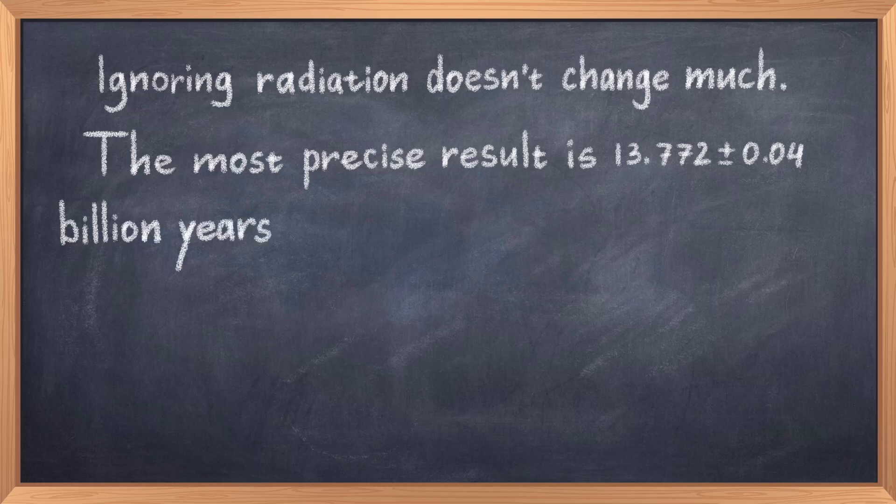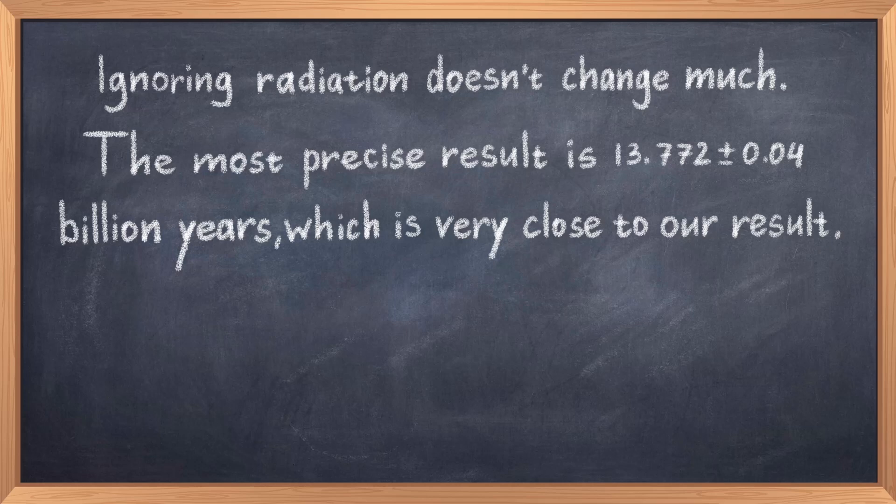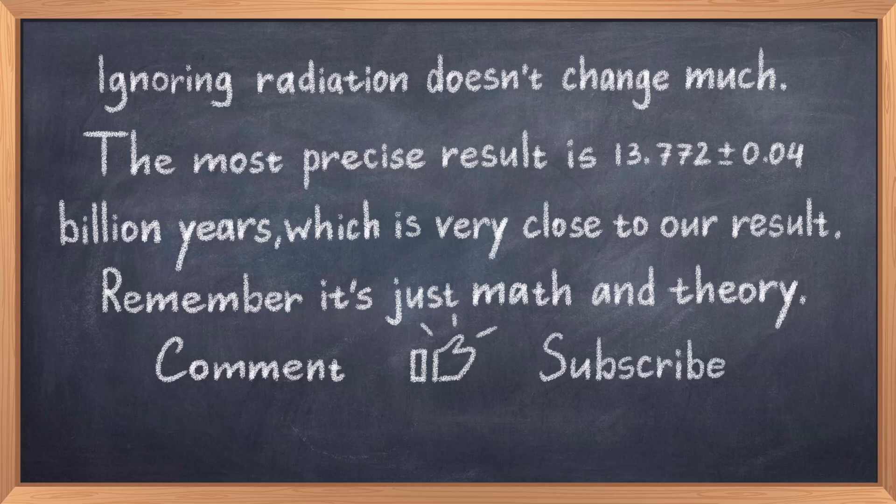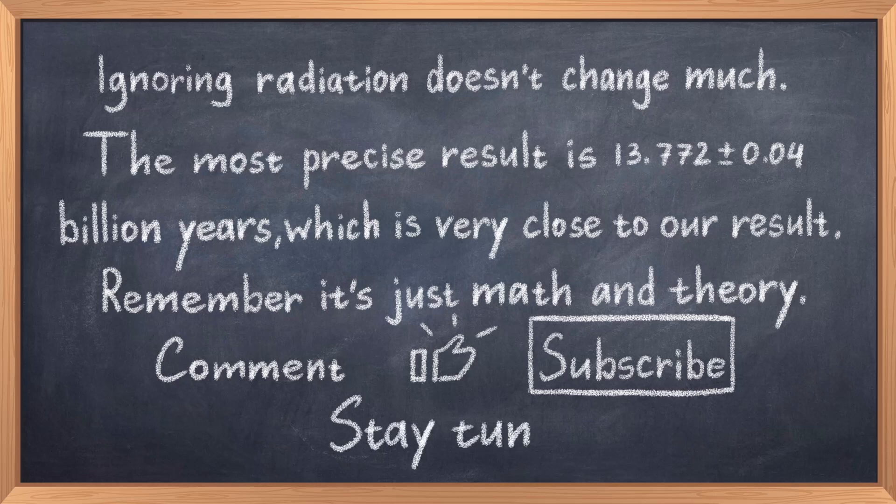Remember this result considers the Lambda CDM model, which is considered the best current model. I hope this video made it clear that to figure out the age, one simply needs a bit of algebra and calculus. There's no magic to it. Hopefully you now have an idea of how the result is calculated, even if you didn't catch all of the math. If you have any questions, please put them in the comment section with any feedback. If you'd like to support the channel, check the link in the description. As always, I hope you liked the video. If you did, please like, subscribe, and share it with your friends. Stay tuned for the next video.